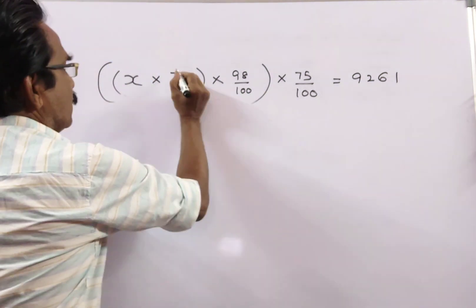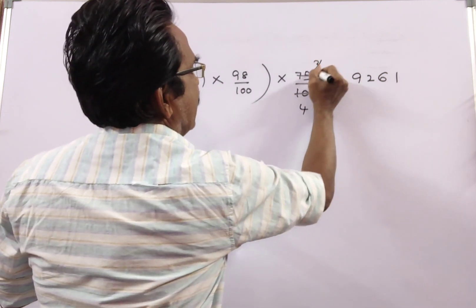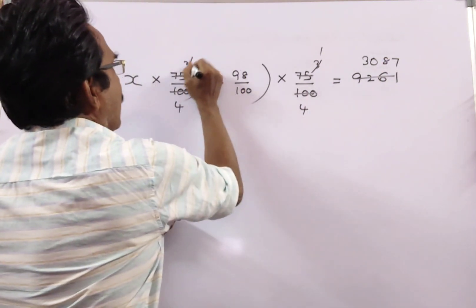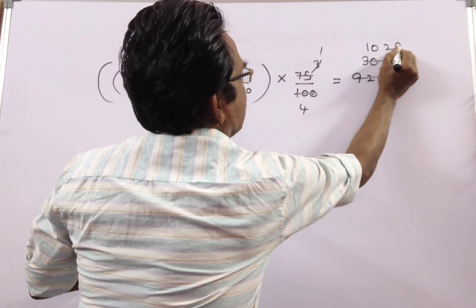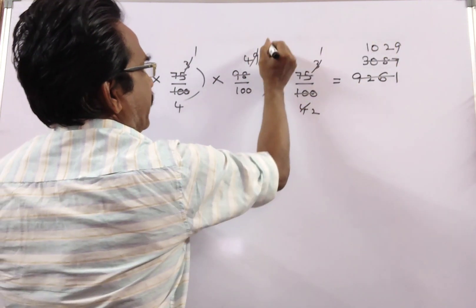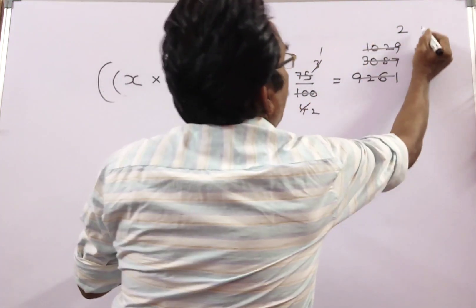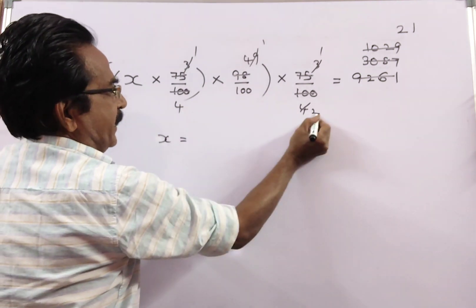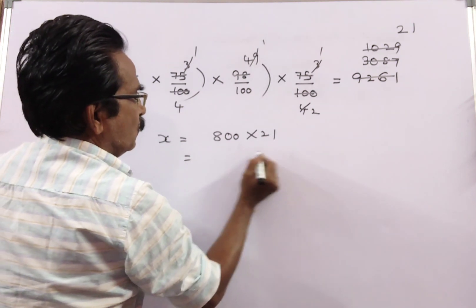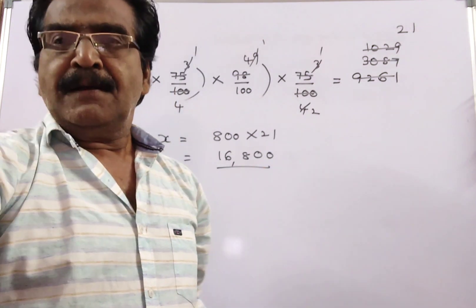Now we have to find x. Solving through the calculation, x is equal to 16,820. This is the total number of votes.